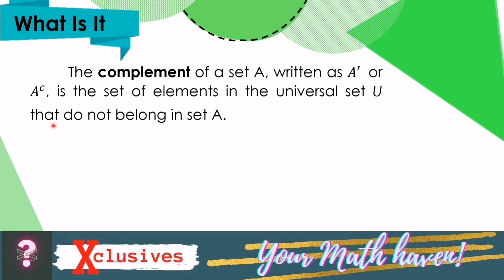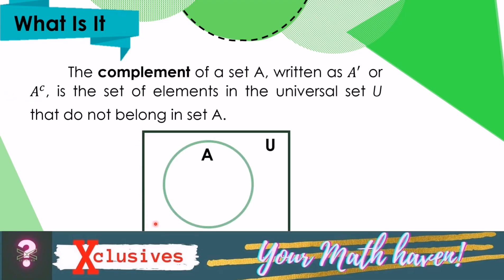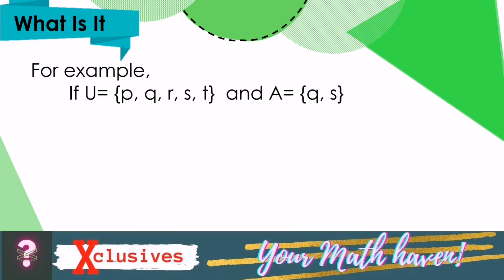Illustrating through a diagram, let the rectangle be our universal set, and the circle be our set A. Then, the shaded region is the complement of set A, because these shaded regions are the elements in universal set U that do not belong to set A.